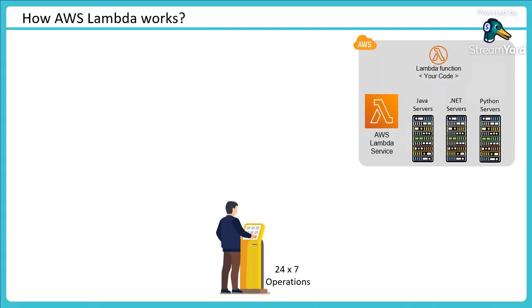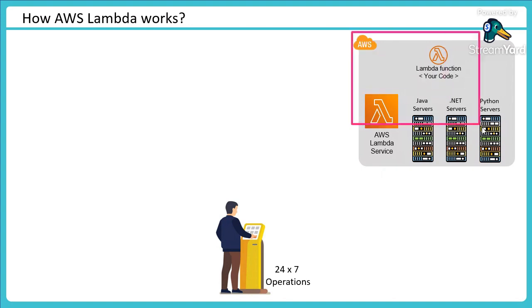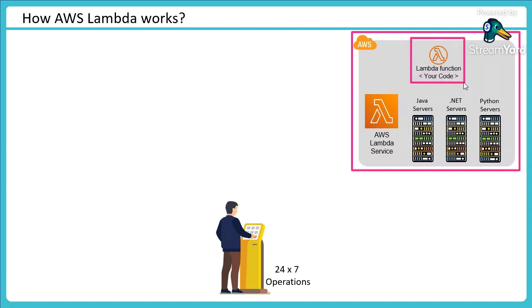Lambda has two components. The first is the lambda service itself, represented by the whole gray box with AWS at the top. When you need to process something, you interact with the lambda service, which handles all back-end infrastructure. Inside that service, you write your code into something called a lambda function. The function is where your code lives — it could be .NET, PHP, Java, or any language you're comfortable with. Your code is stored in the function and executed by the service.